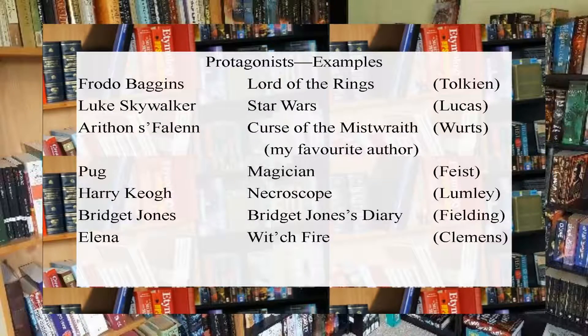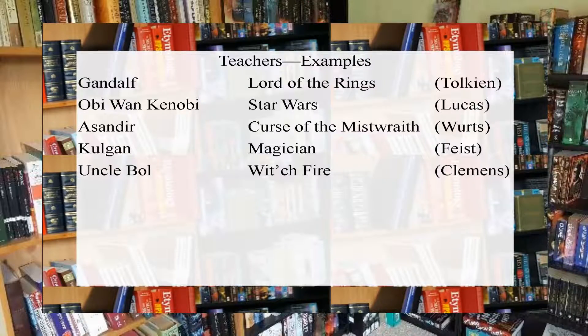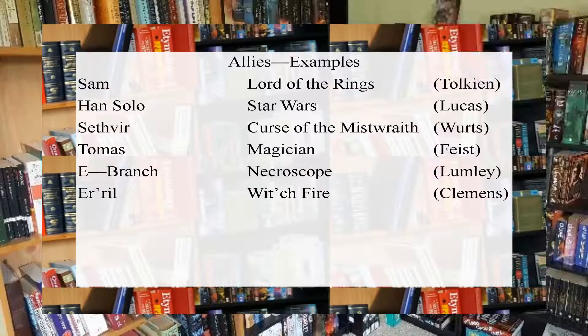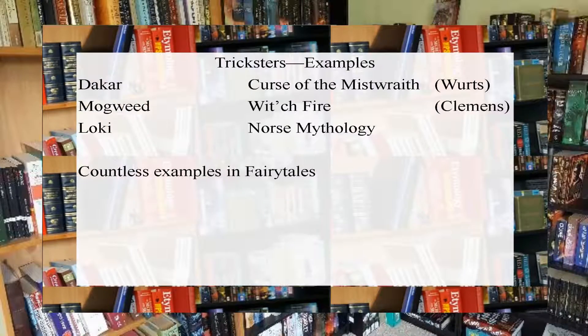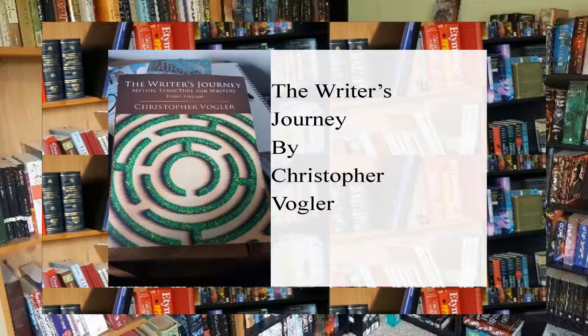I'm just going to pop some examples of protagonists, antagonists, teachers, allies and tricksters on screen just now, just to give you an idea of the sort of characters we're talking about. This is not an exhaustive list of character roles. If you're interested in studying this further, I recommend The Writer's Journey by Christopher Vogler — I will link it in the description. Vogler goes into a lot of detail, provides excellent examples and is an easy read.